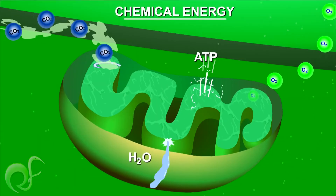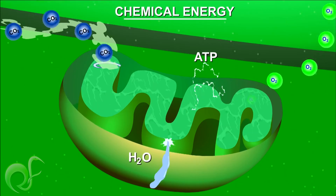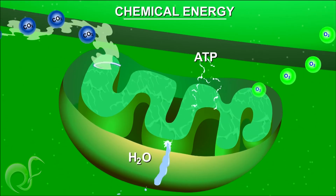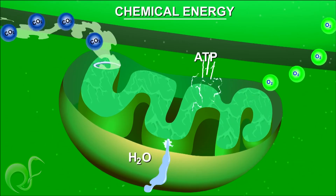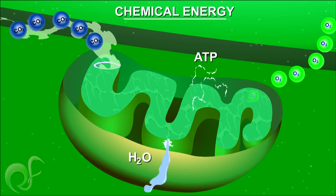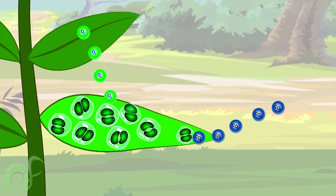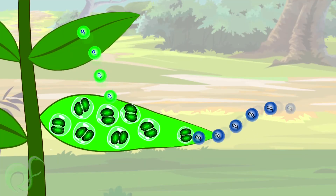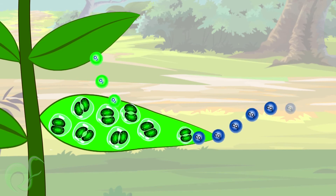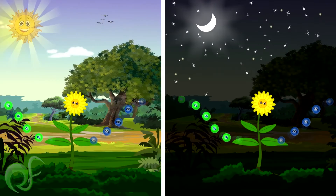Along with oxygen and stored glucose, the process yields ATP — the energy currency — as well as carbon dioxide and water as byproducts. This helps cells to meet their energy needs, and the process continues all the time.